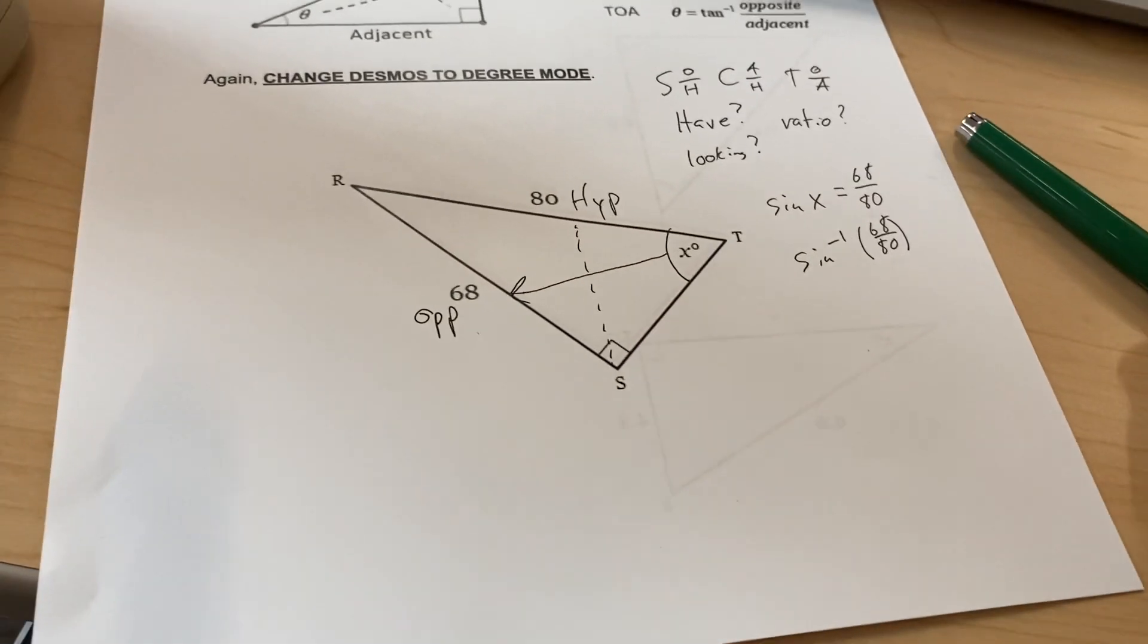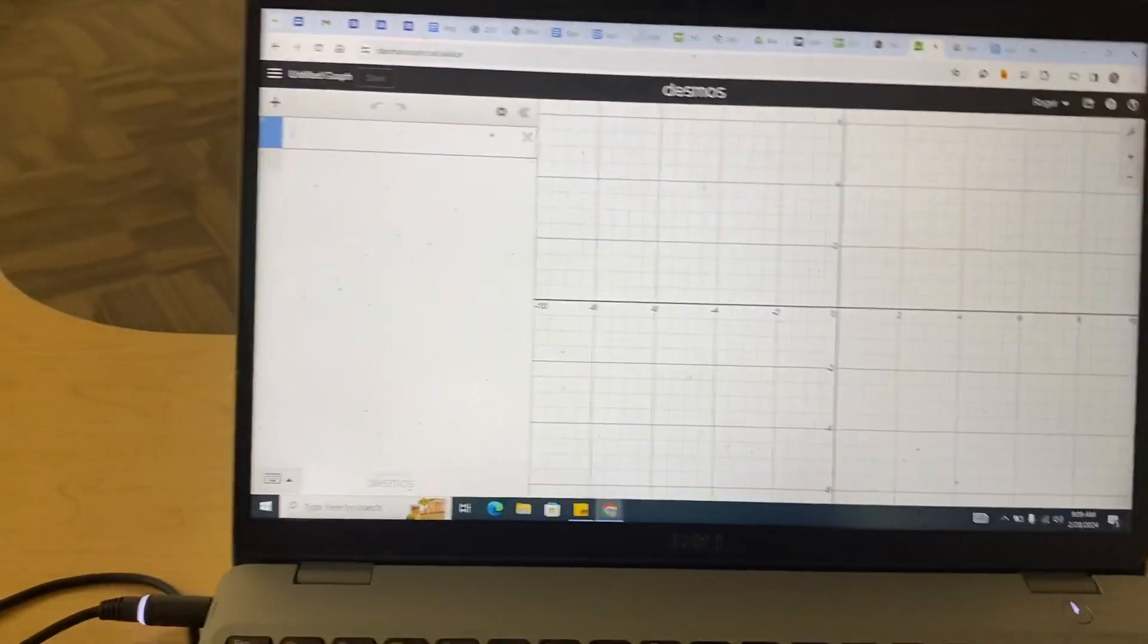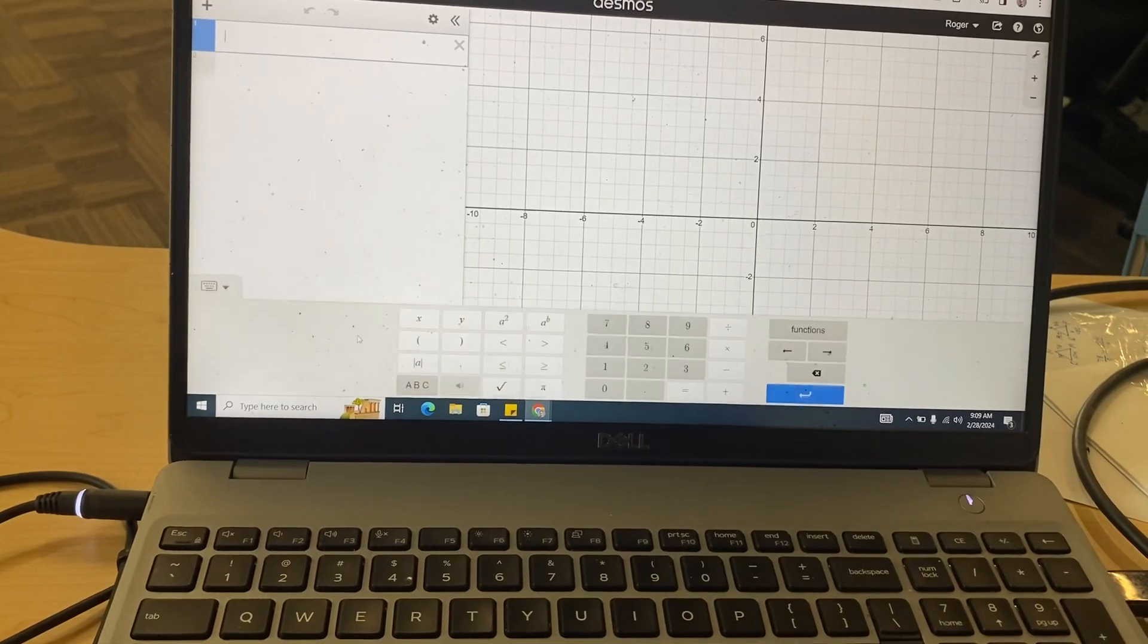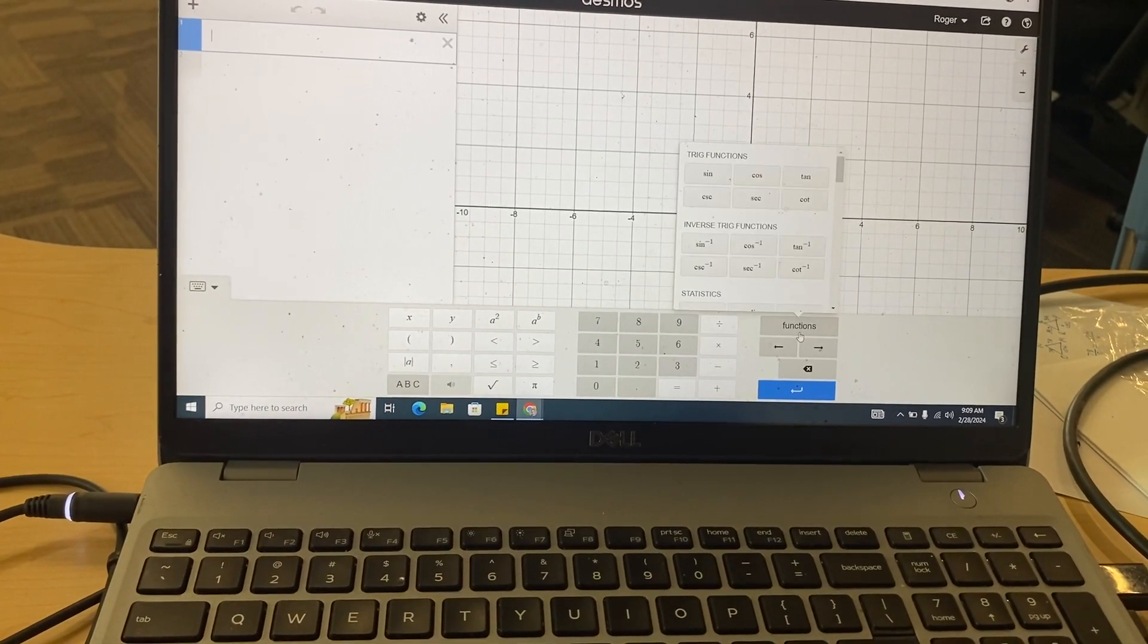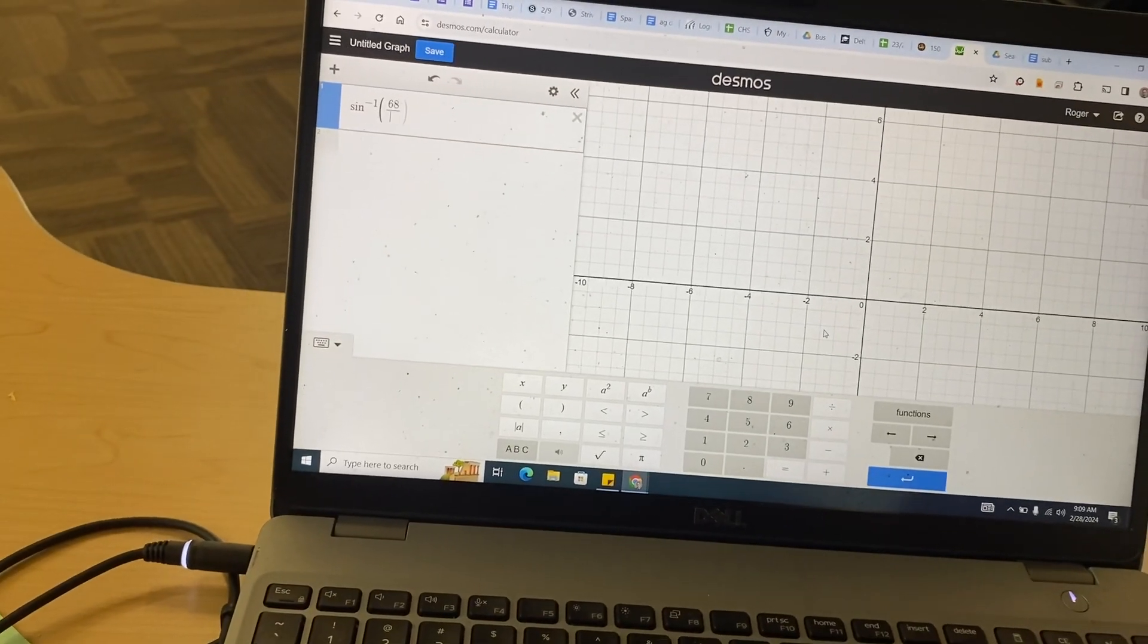We want to round that if we're looking at it in Desmos. Let me click up to Desmos here real quick. Finding it in the Desmos keyboard is probably the easiest way to do that - the inverse sine of 68 over 80.